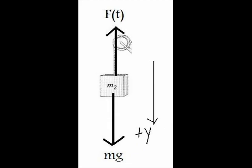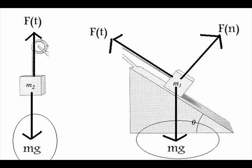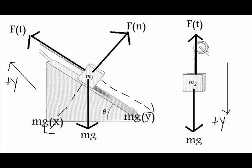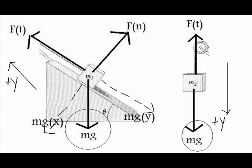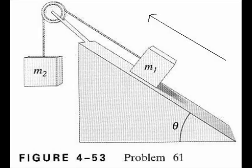Looking at the FBD of both blocks, it can be seen that if M2g is less than M1g sin theta, the acceleration goes down the incline. On the other hand, if M2g is more than M1g sin theta, the acceleration goes up the incline. All this could be found by observing the drawings you have done previously and analyzing the problem.